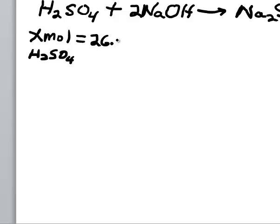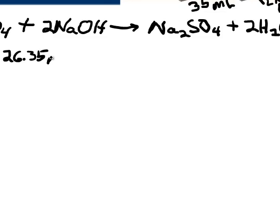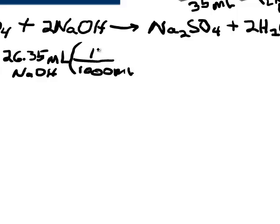We put 26.35 milliliters of NaOH into the Erlenmeyer flask. We need to convert milliliters to liters, and then we're going to multiply this volume in liters times our molarity for the sodium hydroxide, and it's 0.1650 moles.